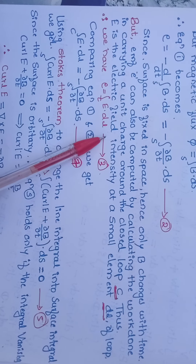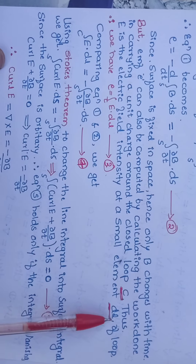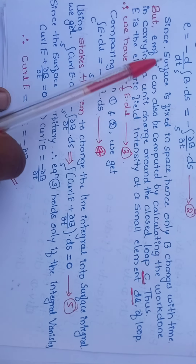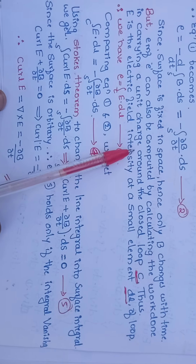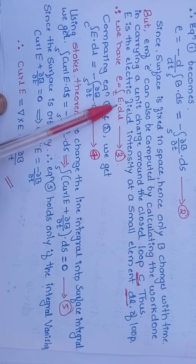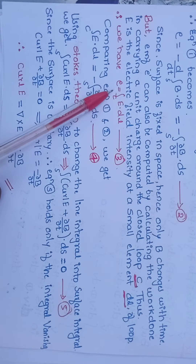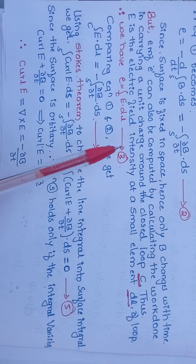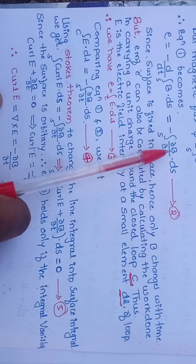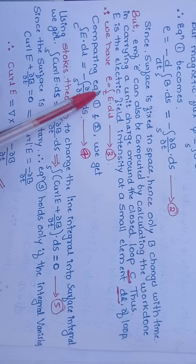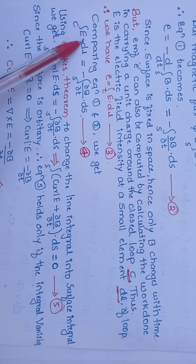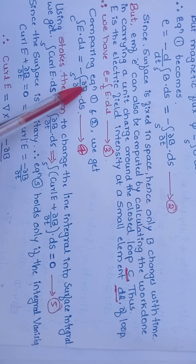The EMF e can also be calculated as the work done in carrying a unit charge around a closed loop C: e equals the line integral of E dot dL. Call that equation number 3, where E is the electric field intensity at a small element dL of loop C. Comparing equations 2 and 3: line integral of E dot dL equals minus surface integral of ∂B/∂t dot dS. Call that equation number 4.